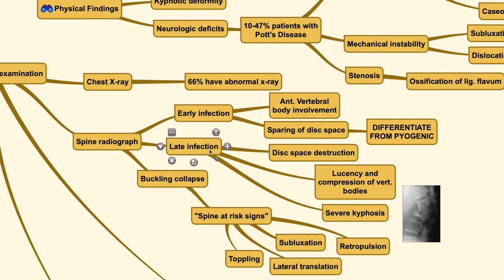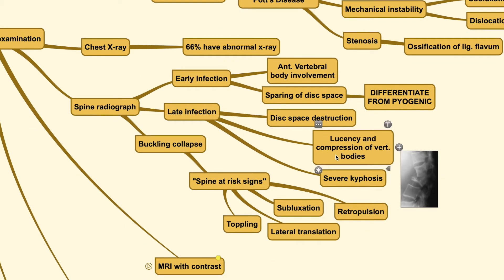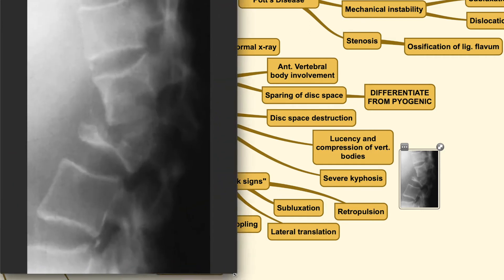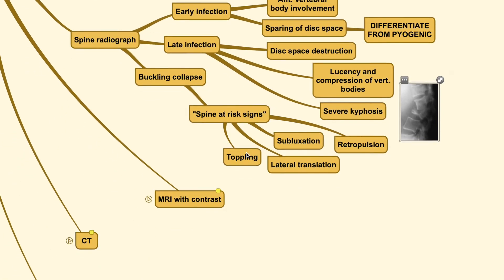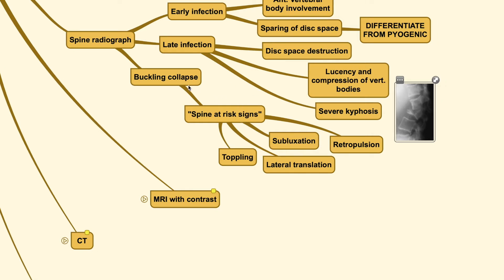Late infection may be very similar to pyogenic, where the disk space is completely destroyed and you could also see lucency and compression of vertebral bodies with severe kyphosis. This image shows a collapse of the anterior section of the vertebral body along with destruction of the disk space and a kyphotic deformity. You also need to look at spine at risk signs, which means the spine has a higher risk of developing a buckling collapse, as seen in the Rajasekaran classification type 3C.